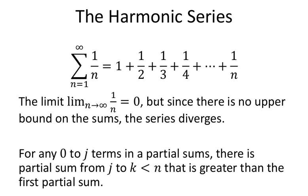You have the harmonic series. That's a series that's just 1 over n, and it counts from n equals 1 up to infinity. So you have 1 over 1 plus 1 over 2 plus 1 over 3, and so on. And now you notice that if you take this function 1 over n and take the limit of it as n approaches infinity, that limit is in fact 0. But since there is no upper bound on the sums, the series diverges.